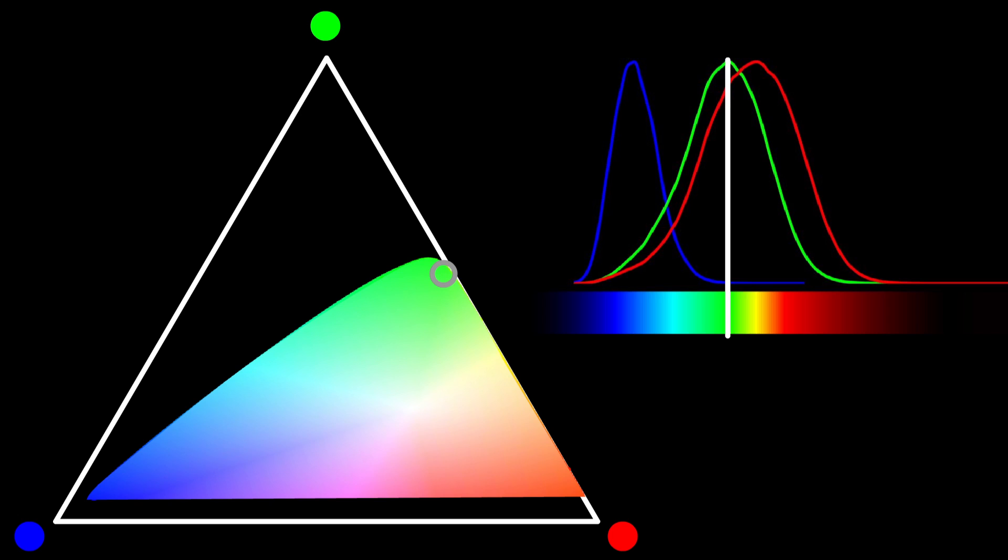When you stimulate your green receptors, your red ones will always automatically react to a certain degree too. Your color receptors are not entirely independent of each other. There are just certain proportions of flavors of light that cannot physically happen in your eyes. Therefore, there are gaps in our diagram.